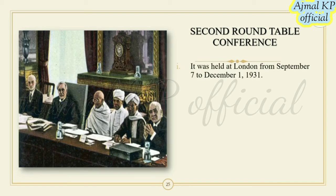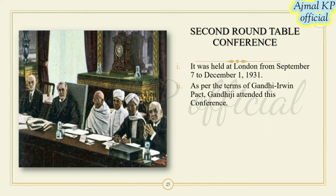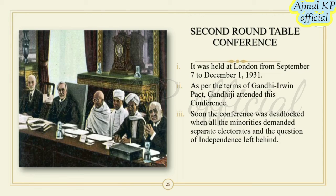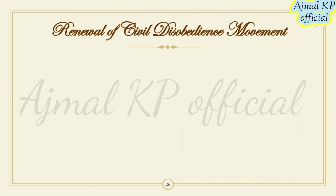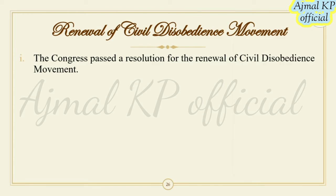Second Round Table Conference: It was held at London from September 7 to December 1, 1931. As per the terms of the Gandhi-Irwin Pact, Gandhiji attended this conference. The conference was deadlocked when all the minorities demanded separate electorates and the question of independence was left behind. The British government refused to grant Dominion status and Gandhiji returned to India with disappointment.